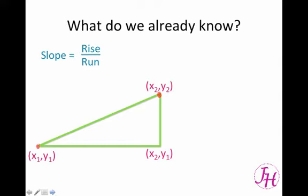So we can label our points with generic ordered pairs. If this one is x1, y1, and this one is x2, y2, then this point is going to be x2 because it has the new x value. It's traveled horizontally, but it hasn't gone up at all, so it's still y1.